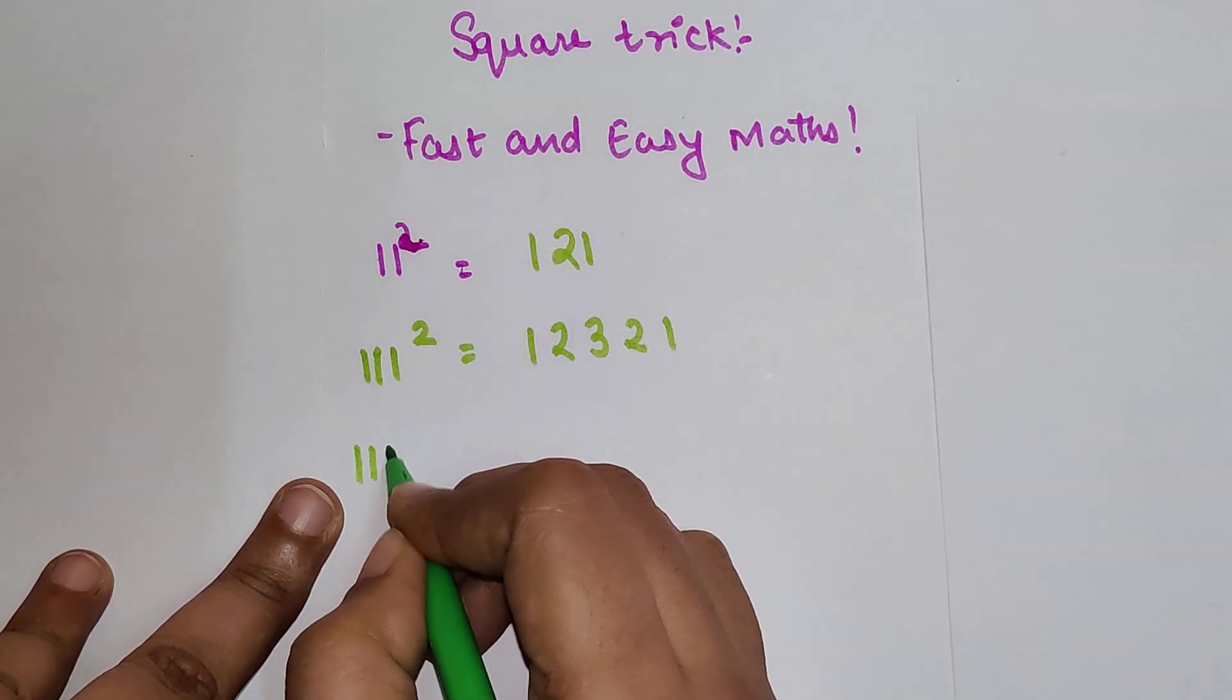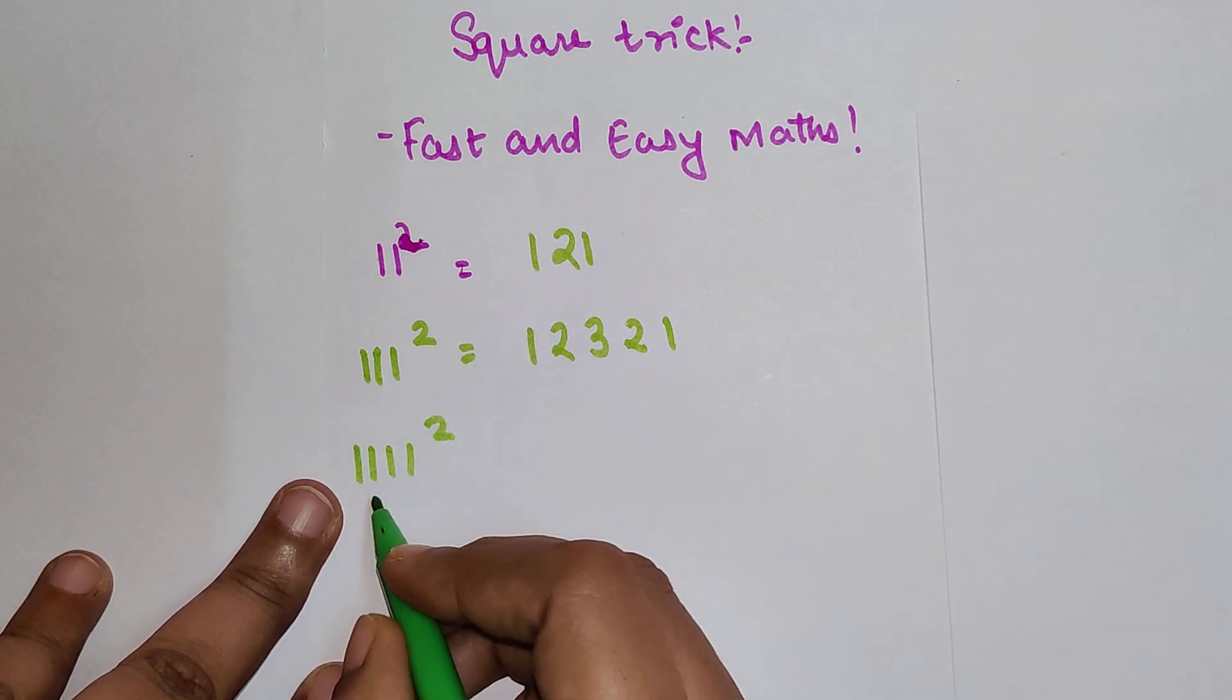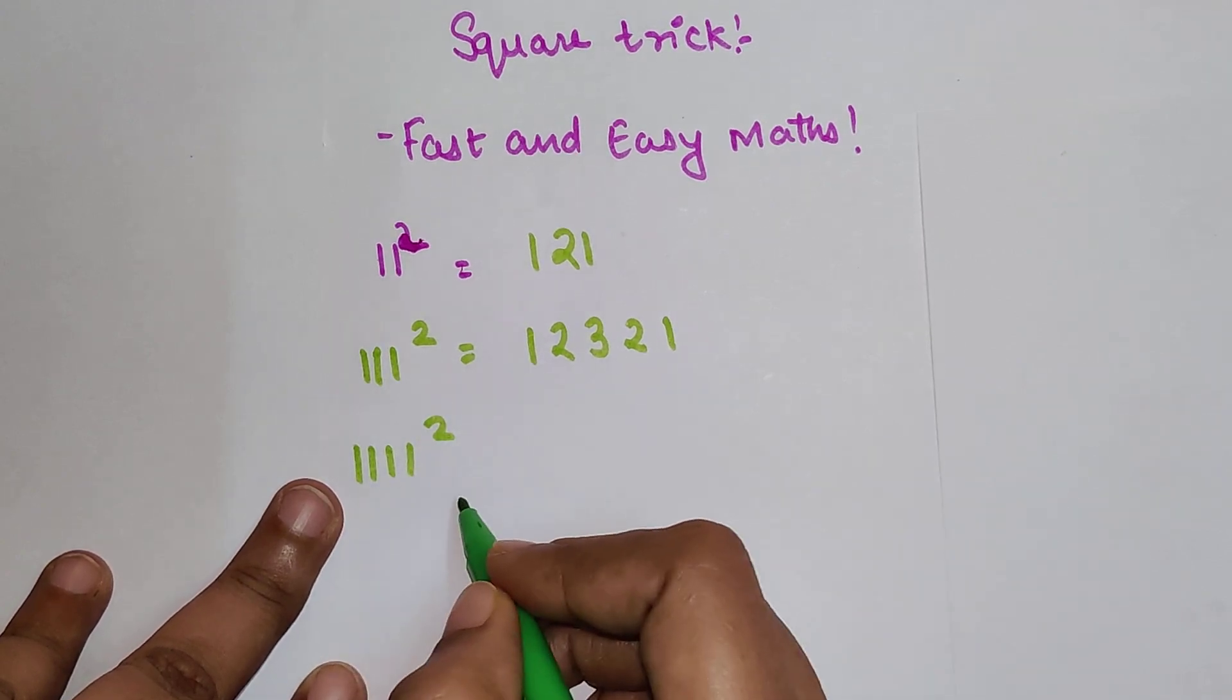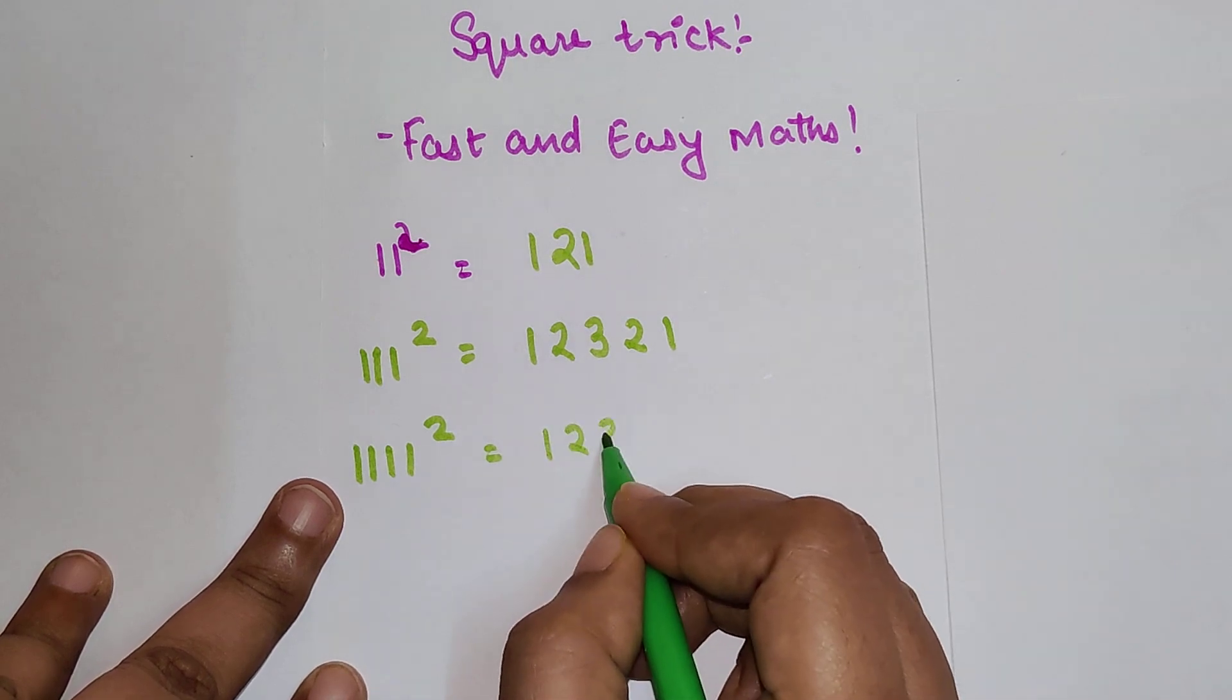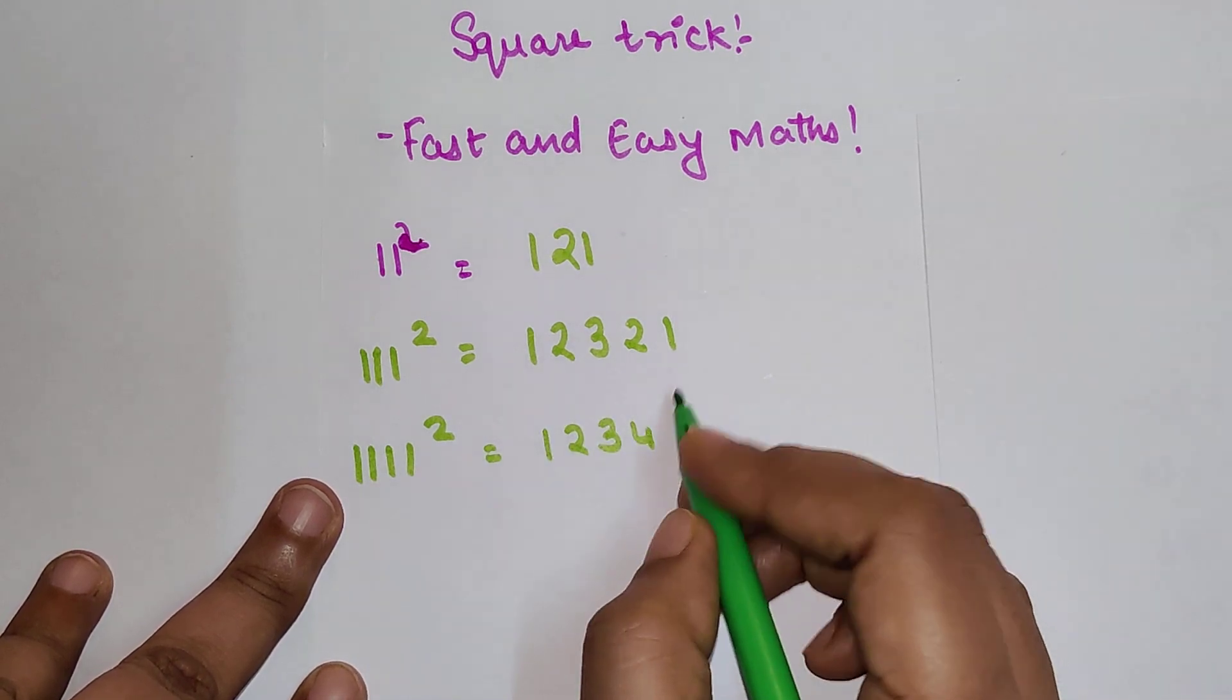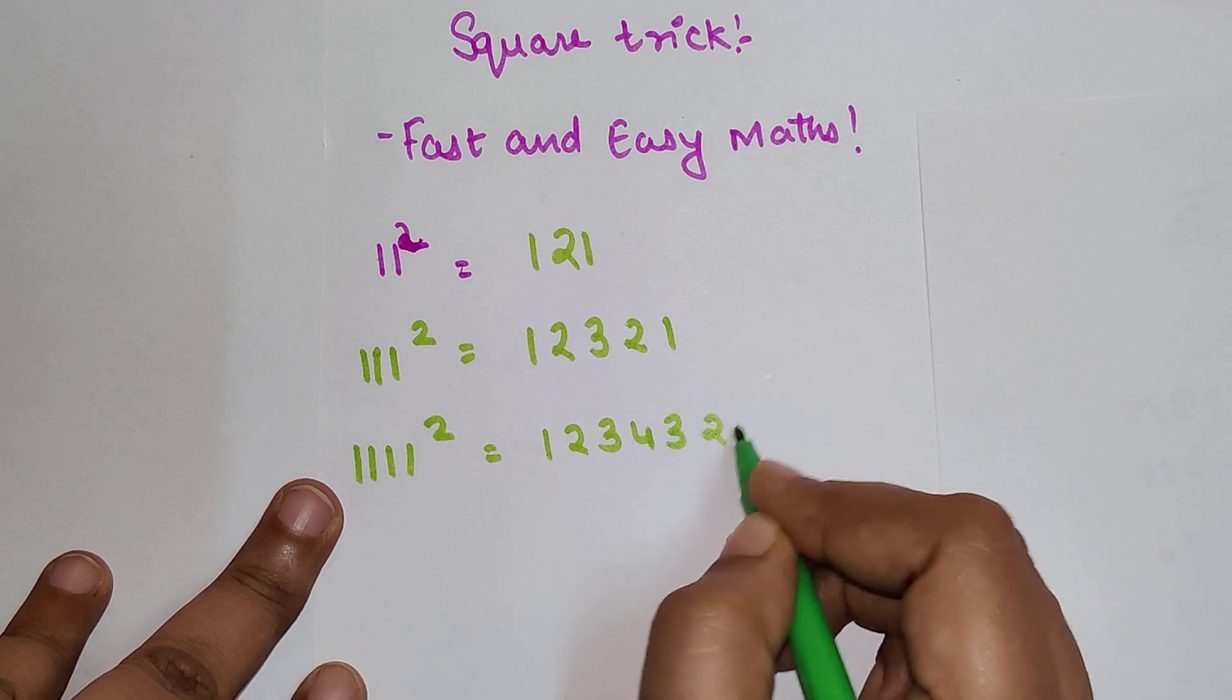Now again, what happens when we have four 1s, or basically 1111 squared? In that case we have four 1s, so we go up to 1, 2, 3, 4 and then we go back which is 3, 2, 1.